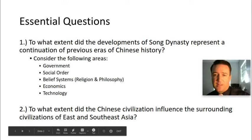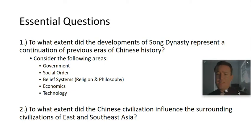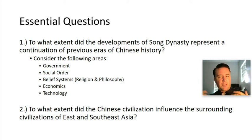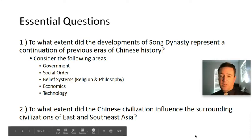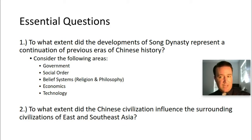The first essential question is: to what extent did the developments of the Song dynasty represent a continuation of previous eras in Chinese history? How are they similar to what's happened before, and how is it different? Is it a high or low extent? The next one is also a 'to what extent' question: to what extent did Chinese civilization influence the surrounding civilizations of East and Southeast Asia? Give examples and explain why those examples support your answer.